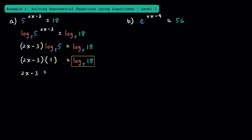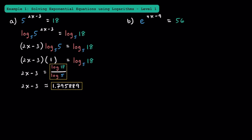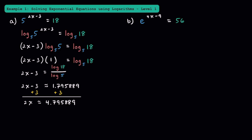On the right side, let's rewrite log base 5 of 18 using the change of base formula as log of 18 divided by log of 5. Whenever you're solving logarithms, keep in mind that you can always rewrite logs this way. Since I didn't write the base, it's by default going to be 10. Putting this into a calculator, we should get about 1.795889. Adding 3 to both sides, we get 2x is about 4.795889, and dividing both sides by 2, we find that x is about 2.398.